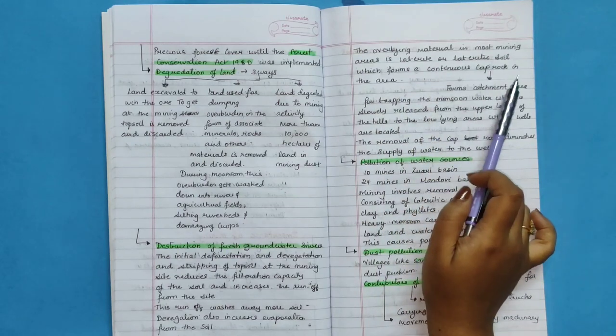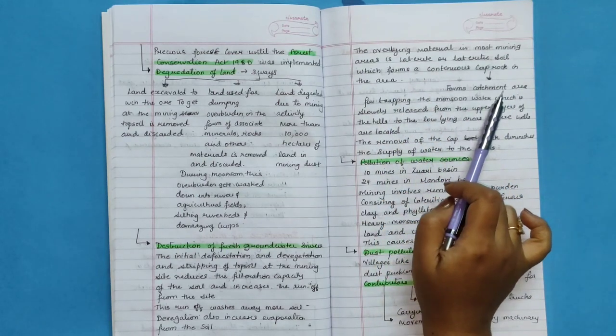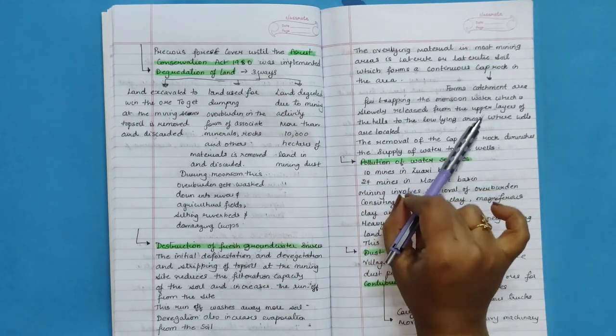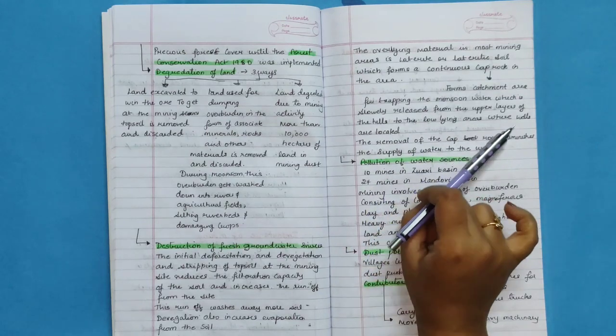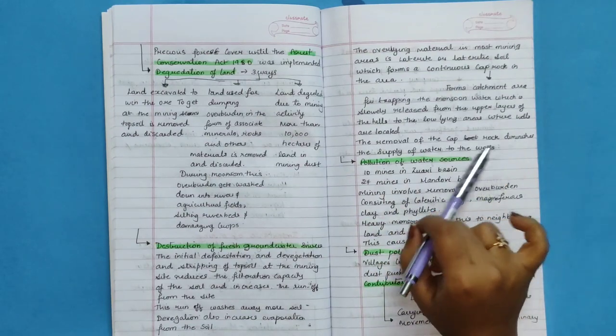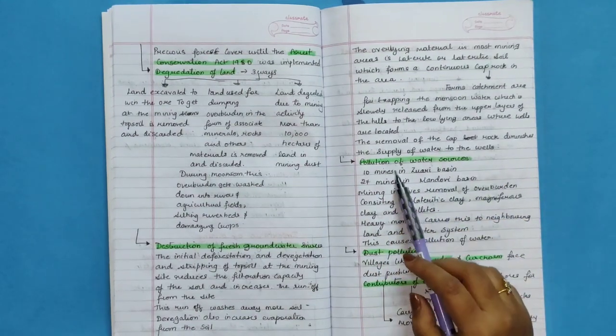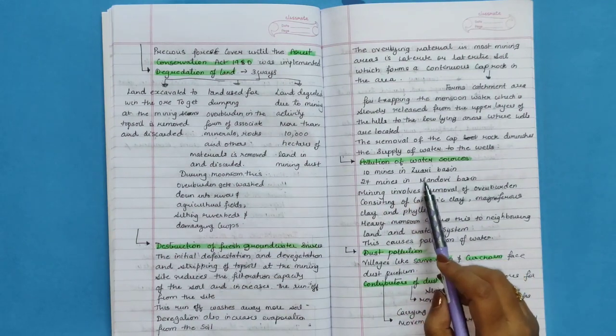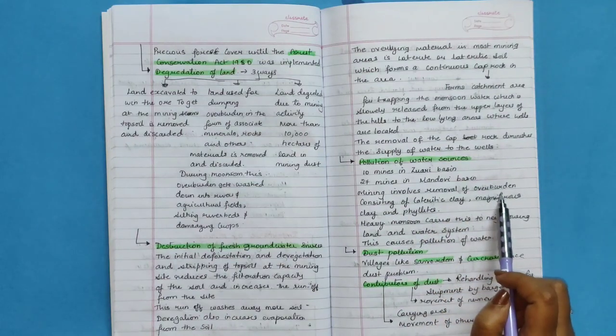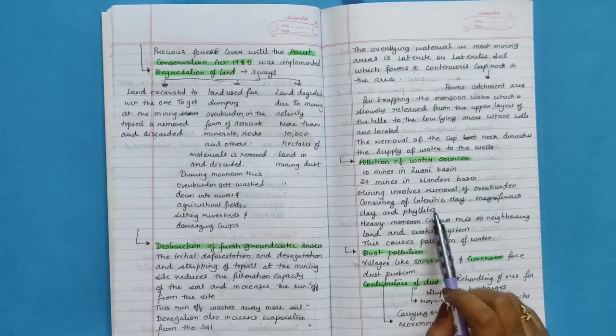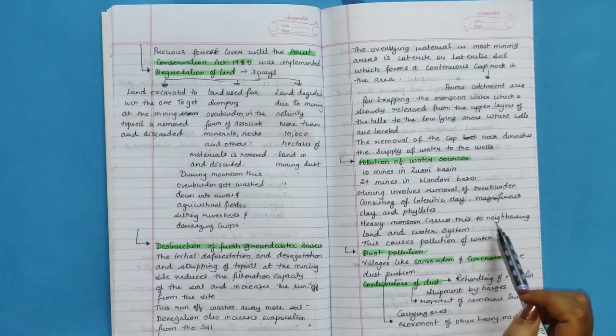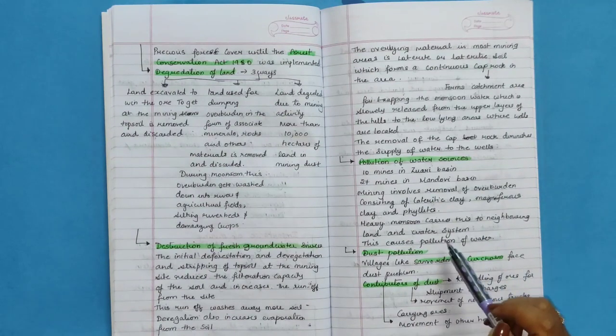This runoff washes away more soil and vegetation, also increases evaporation from the soil. The overlying materials in most mining area is laterite or lateritic soil, which forms a continuous cap rock in the area. Cap rock forms catchment areas for trapping the monsoon water, which is slowly released from the upper layer of the hills to the low-lying areas where wells are located. The removal of the cap rock diminishes the supply of water to the wells. Pollution of water sources. 10 mines in Zuari Basin and 27 mines in Mandovi Basin. Mining involves removal of overburden consisting of lateritic clay, manganiferous clay, and phyllites.